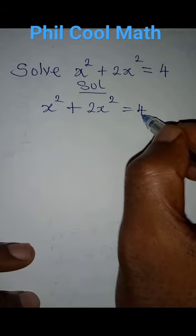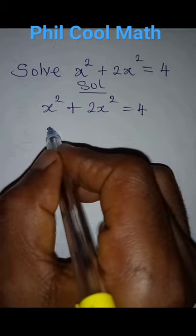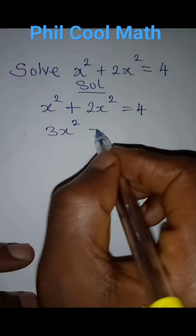Okay, so what do we do? The next thing we're going to do is to add the left-hand side so that we have 3x squared and it will be equal to 4.